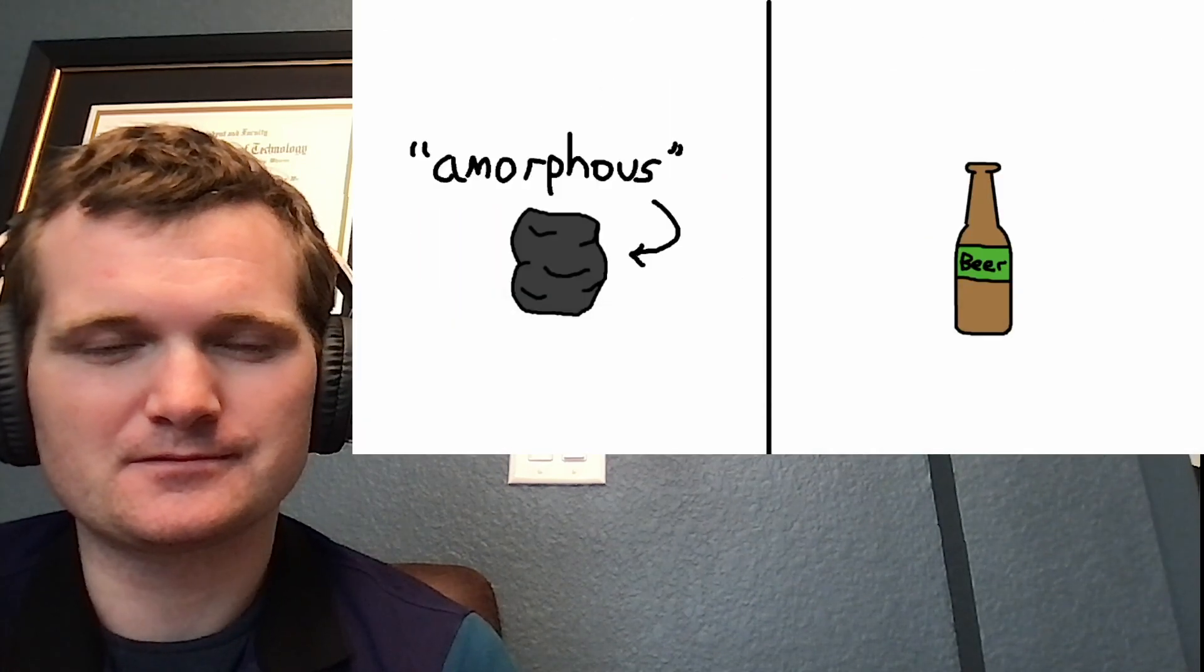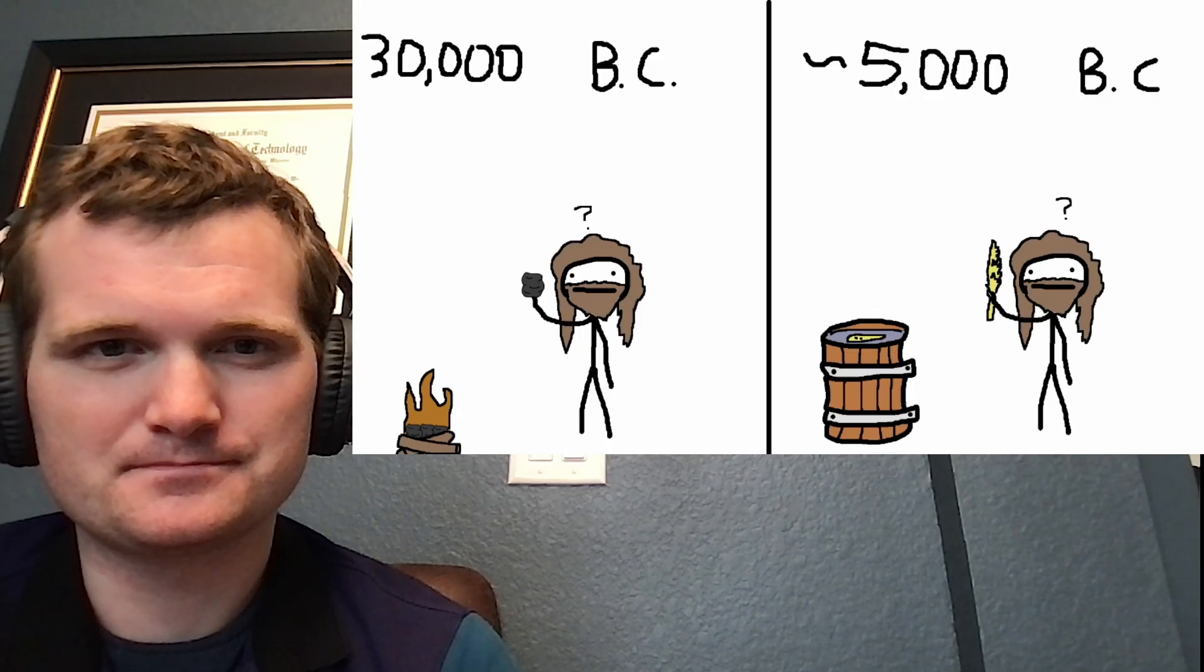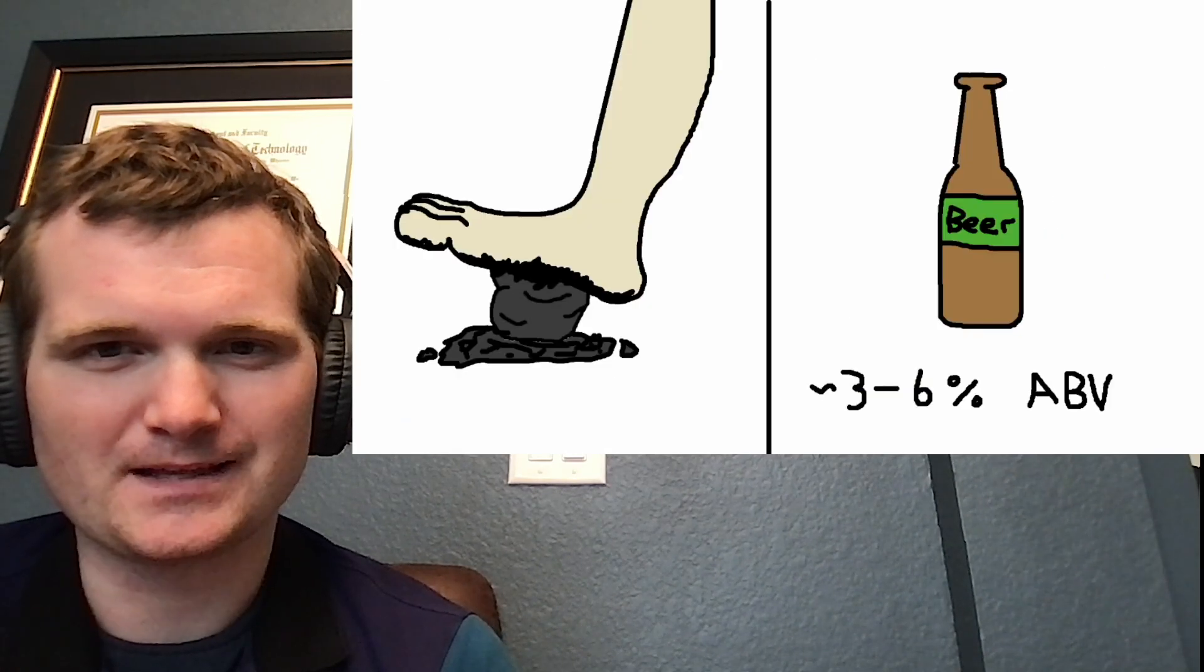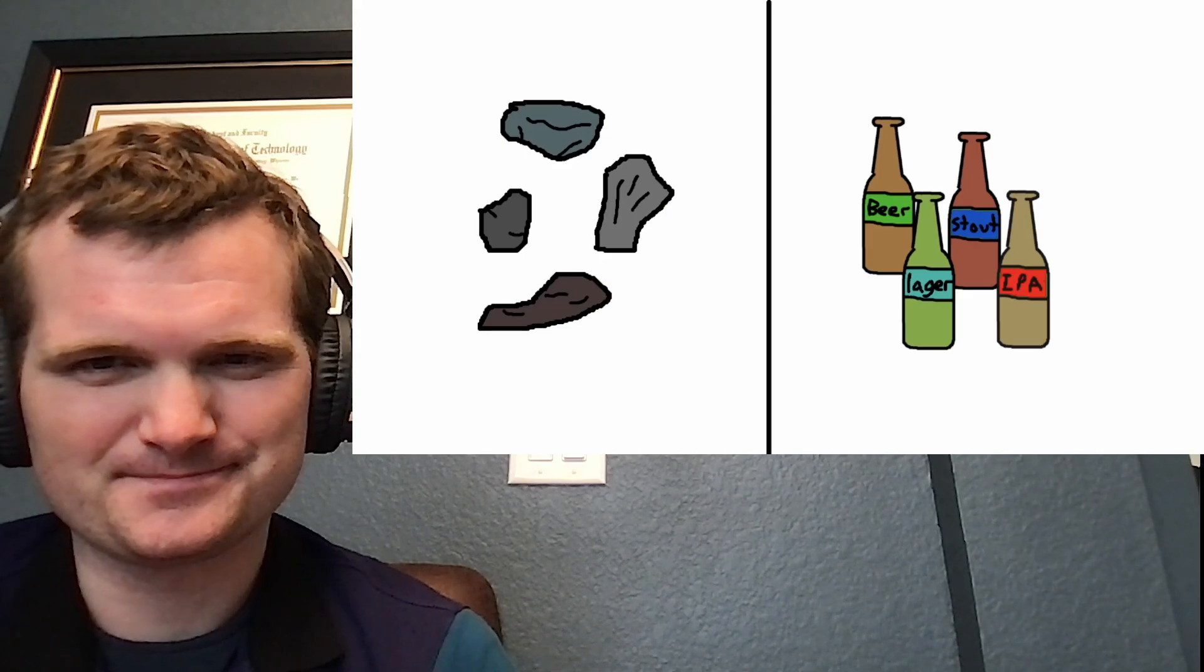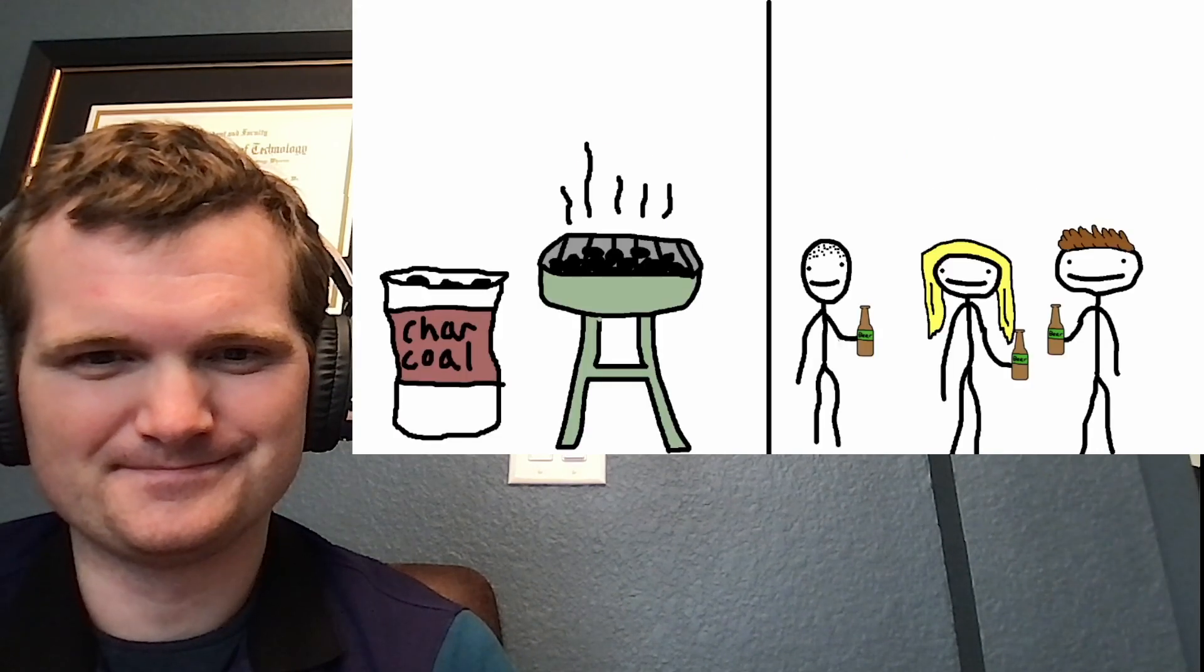So amorphous carbon is like beer. It's the first form to ever be produced by humans, likely by accident. It's also the weakest form. It has a bunch of varieties, most of which taste terrible. And you need a whole lot of it if you want to have a good cookout.